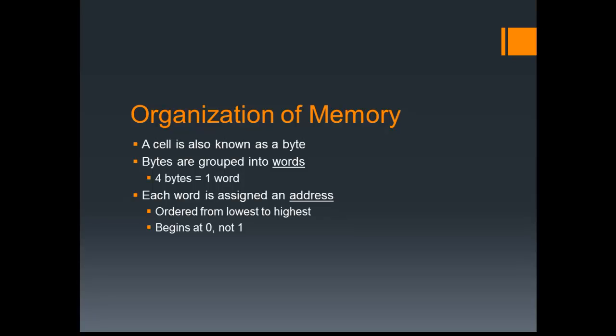One byte is worth eight bits. Bytes are then grouped into words, so four bytes all squished together is equal to one word — that's usually in most systems. You can sometimes get a system where two bytes or six bytes is a word, but it's more common that four bytes is a word. Each word is assigned an address in memory, and each address is always ordered from the lowest to the highest, starting at zero.